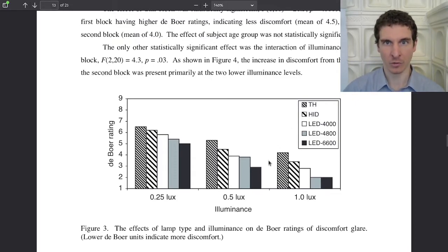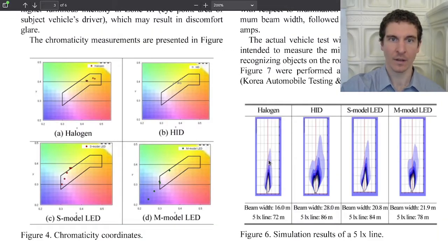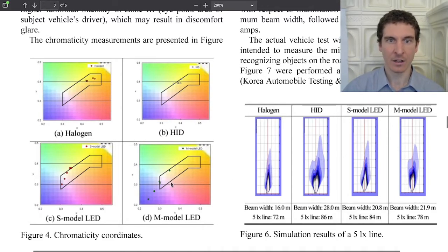Without even providing better road illumination, with some caveats I'll get back to. Meanwhile, the industry started a race towards bluer and bluer headlights within the allowable range for white light. But in many cases, they also exceeded this range, so far without legal consequences.